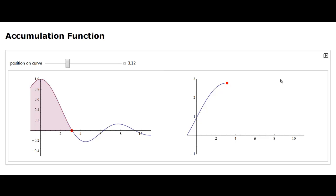In fact, when the original function is zero, the accumulation function has a slope of zero. Then again, when it's negative, if the original function is a small negative number, then it's decreasing very slowly. When the original function is a larger negative number, the accumulation function is decreasing more quickly.